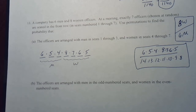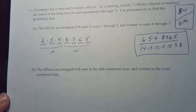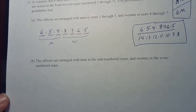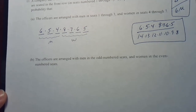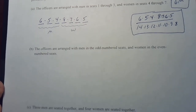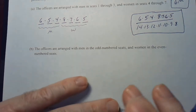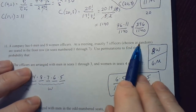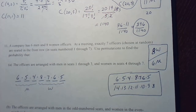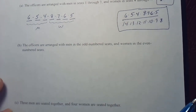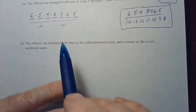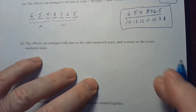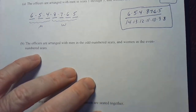Parts B and C are related to this. For part B, what is the probability that the officers are arranged with men in the odd-numbered seats and women in the even-numbered seats? We're still seating seven officers chosen at random in seats one through seven, so it's random. The denominator remains the same — total number of ways to seat seven of these 14 people.